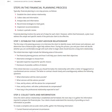Steps in the Financial Planning Process. Typically, financial planning is a six-step process as follows: 1. Establish the client-advisor relationship. 2. Collect data and information. 3. Analyze data and information. 4. Recommend strategies to meet goals. 5. Implement recommendations. 6. Conduct a periodic review. Financial planning involves the same set of steps for each client. However, within that framework, a plan must address the unique and specific needs of the particular client to be effective.